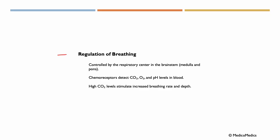Now let's talk about the regulation of breathing. This is controlled by the respiratory center in the brainstem, in the medulla and the pons. We have chemoreceptors that detect CO2, O2, and pH levels in our blood. If we detect high CO2 levels, this will stimulate increased breathing rate and depth.